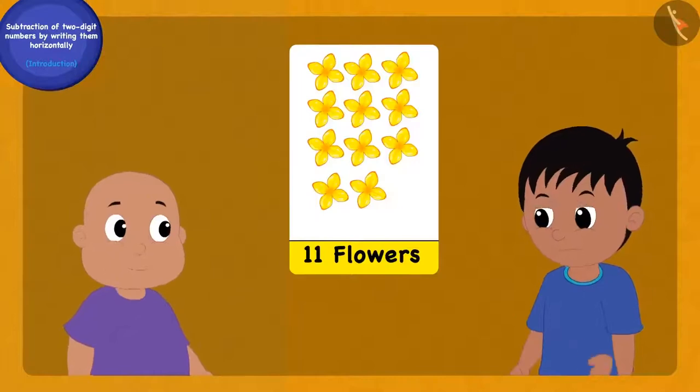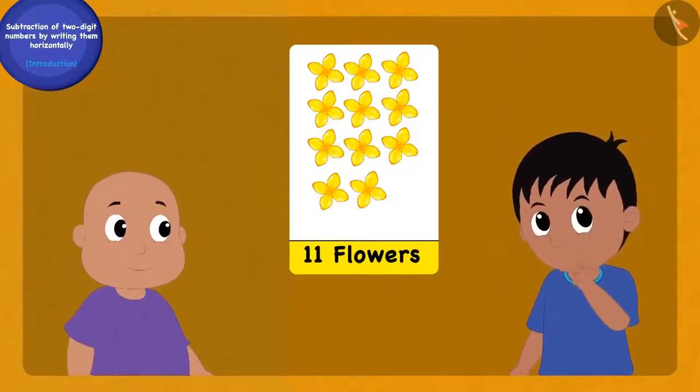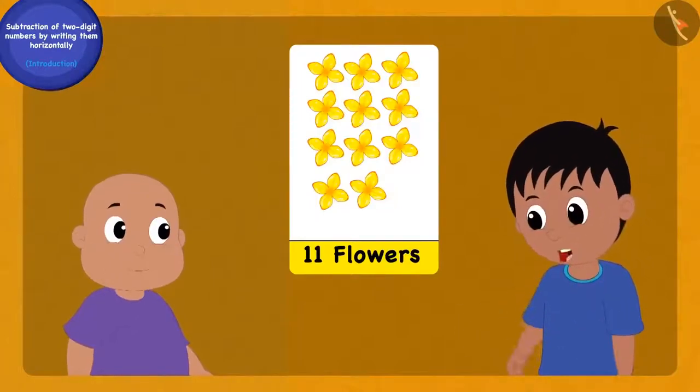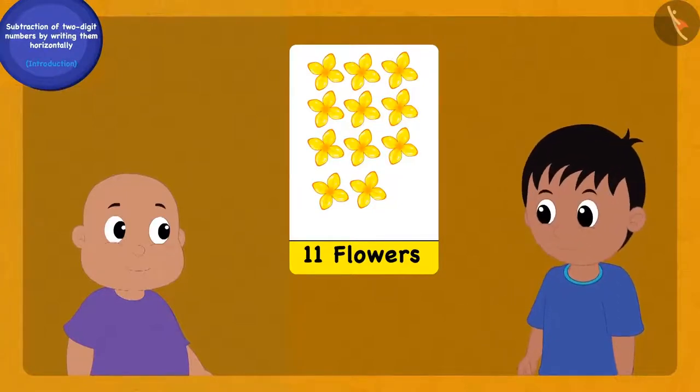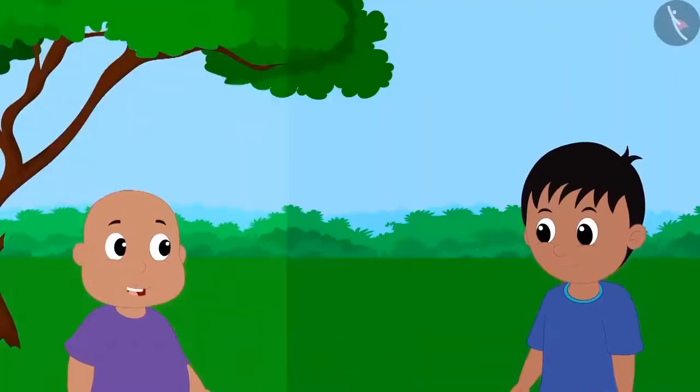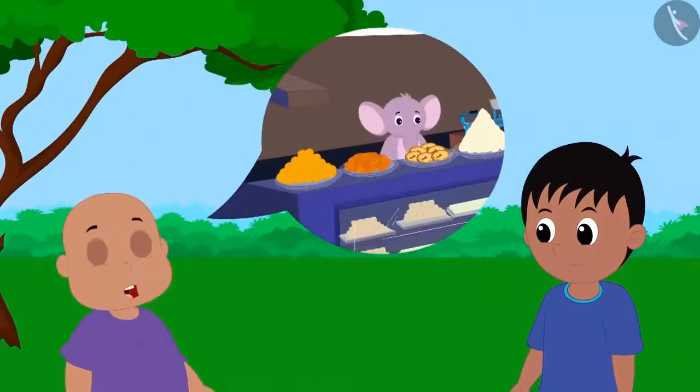Did you understand, Raju? Raju still could not understand clearly. Can you explain that to me with another example? Raju said to Bablu, let's go to Appu's sweet shop.